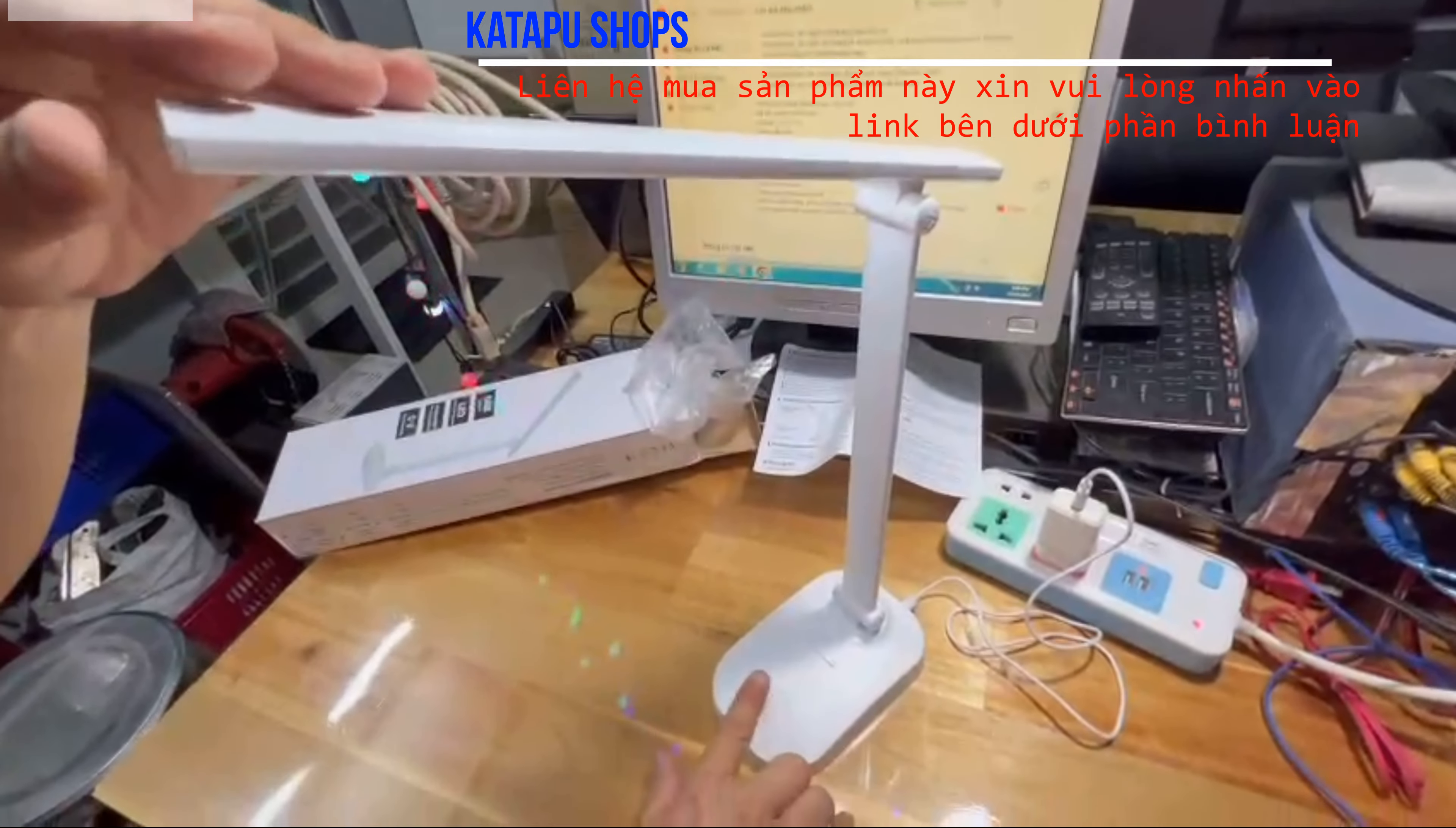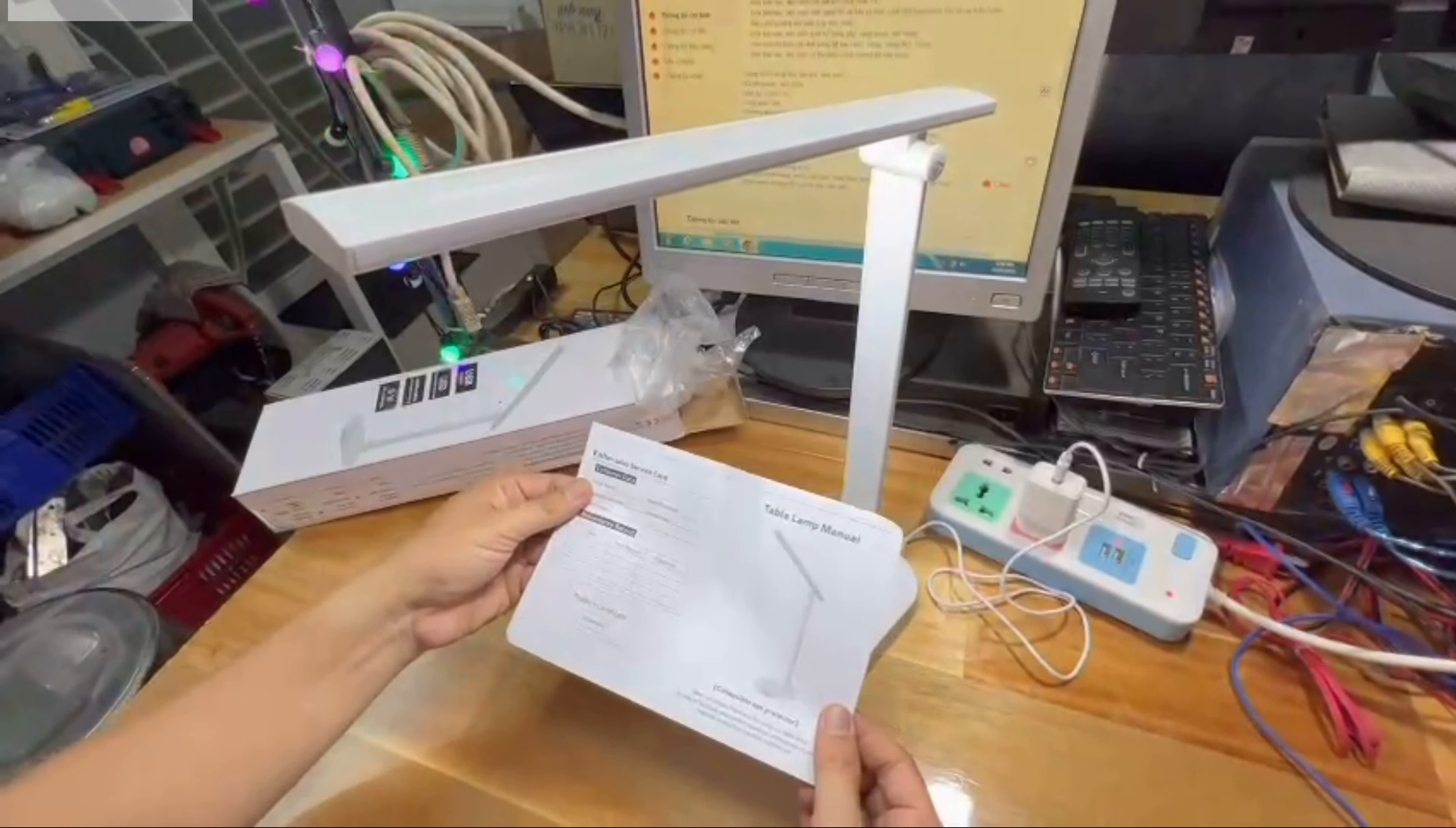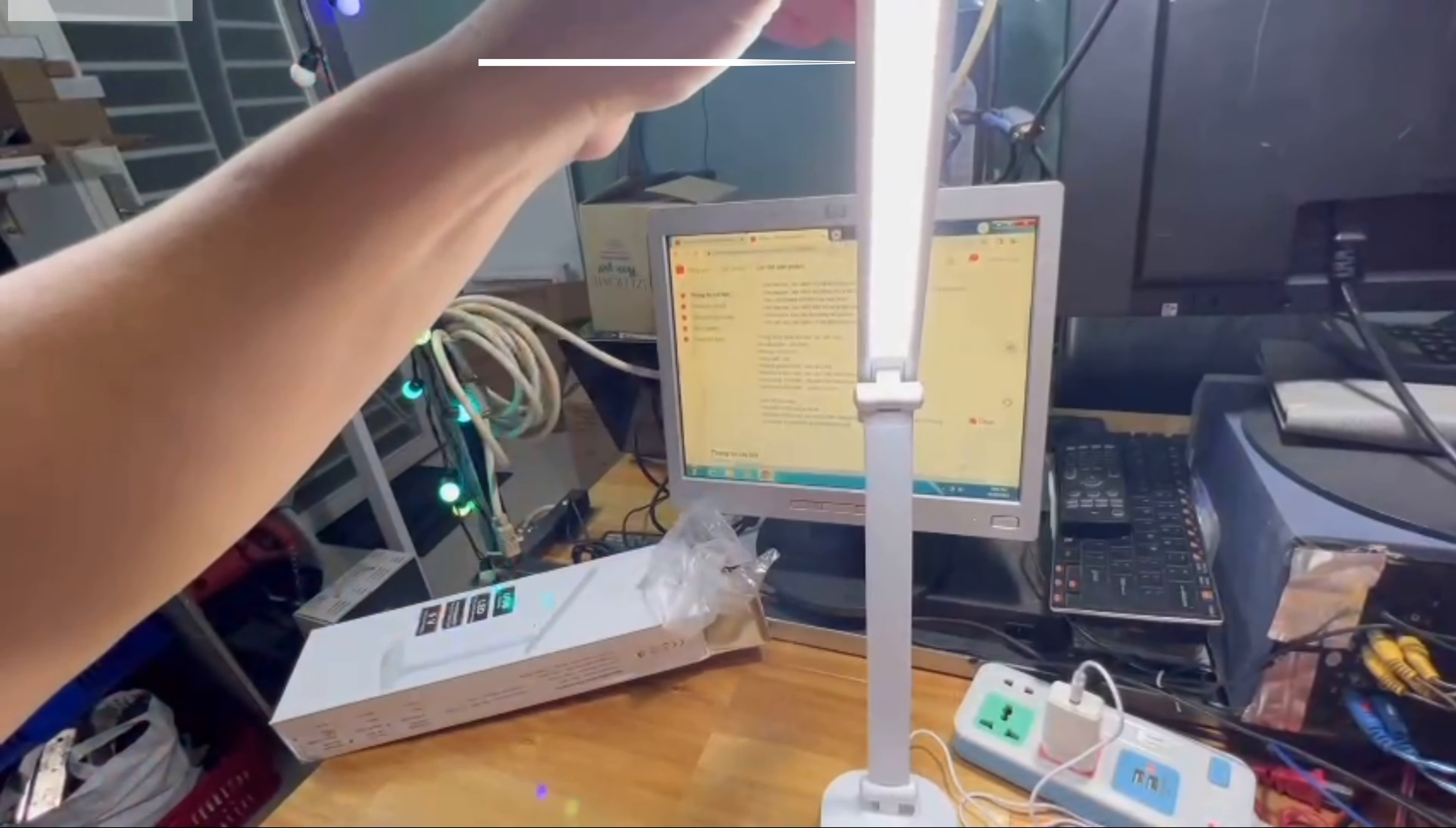Mình bấm thêm lần nữa thì nó sẽ đổi ánh sáng, sáng hơn nữa. Cái này là sáng cao nhất, rất dễ học hành và đọc sách. Ánh sáng rất rõ ràng và vừa để đọc, không sáng quá làm hư mắt mà cũng không tối quá. Mình có thể chạm nước để tắt. Nó có ba cấp: một là sáng vừa, hai là sáng trung bình, ba là rất sáng.